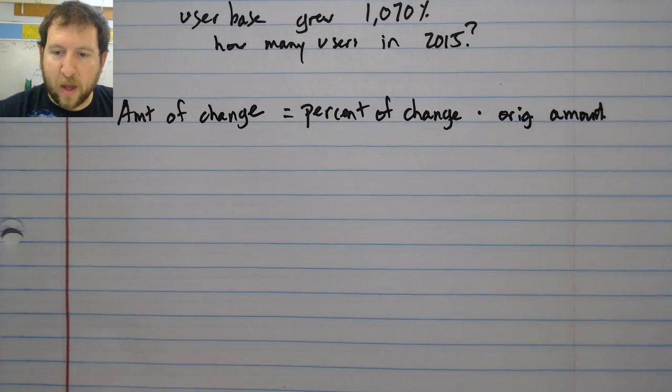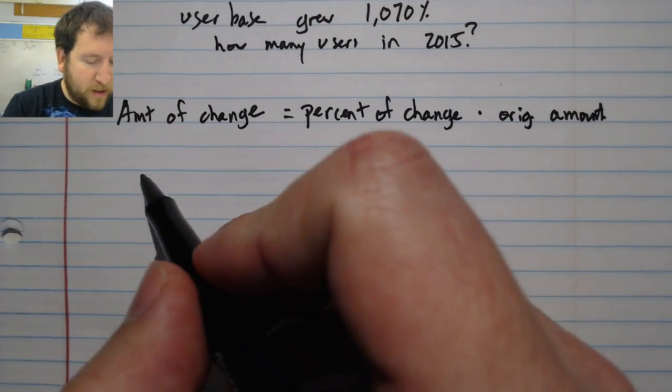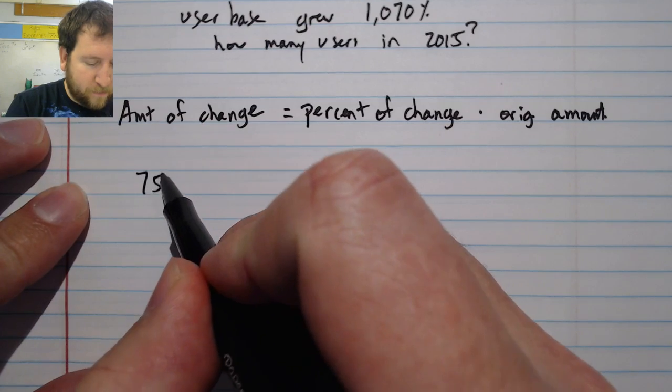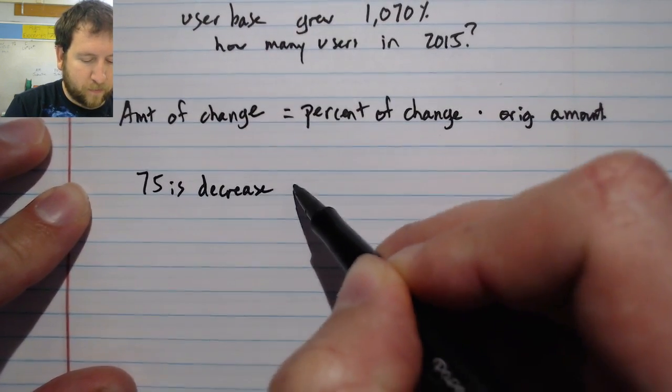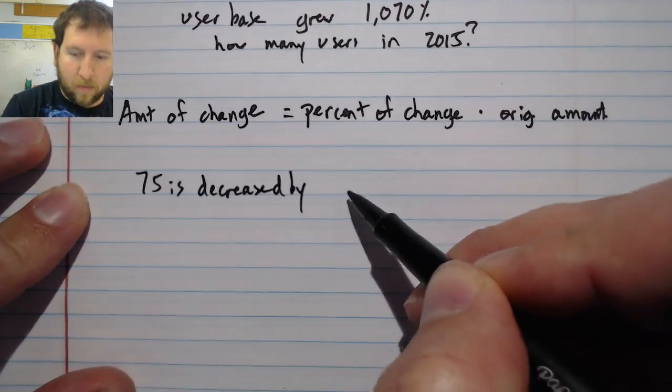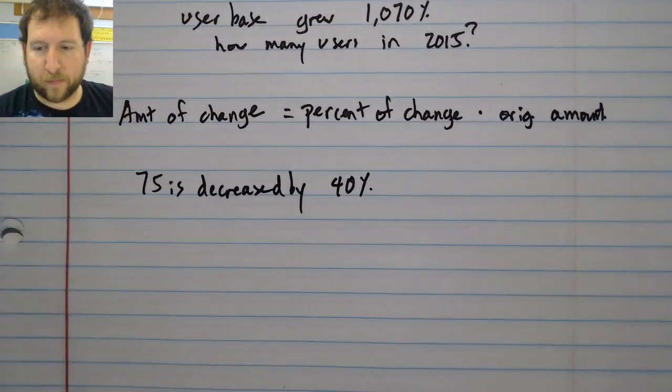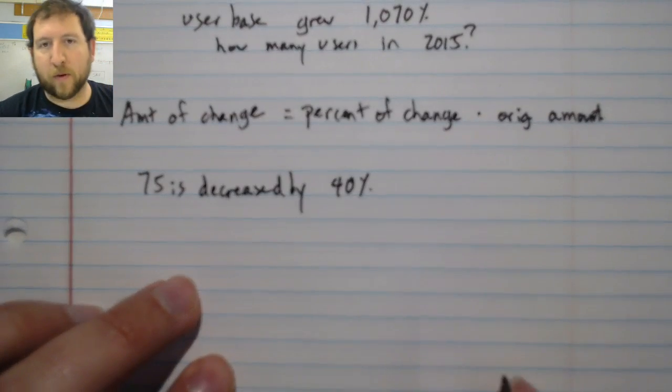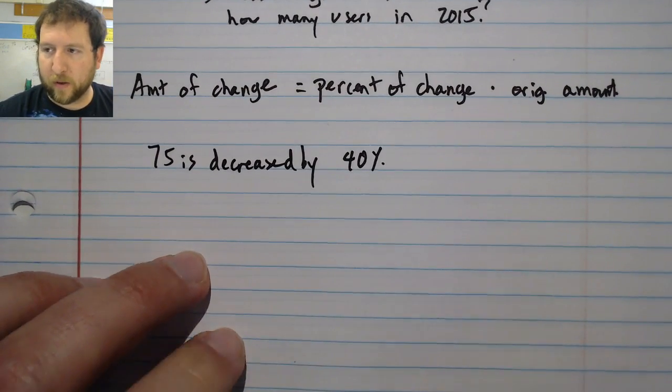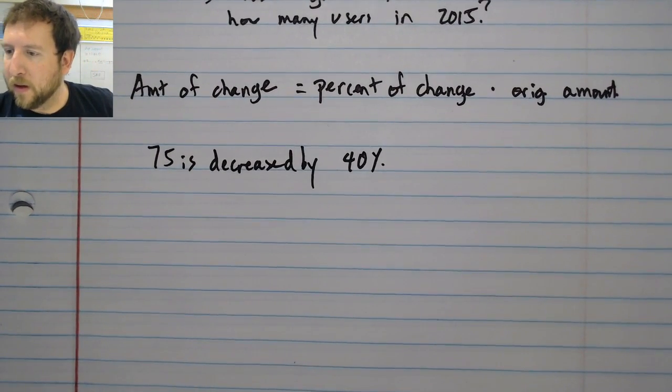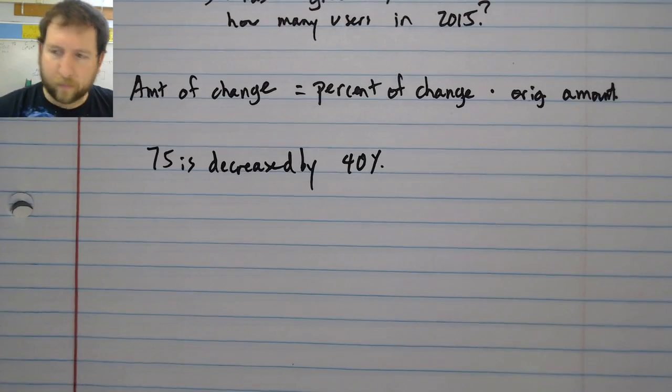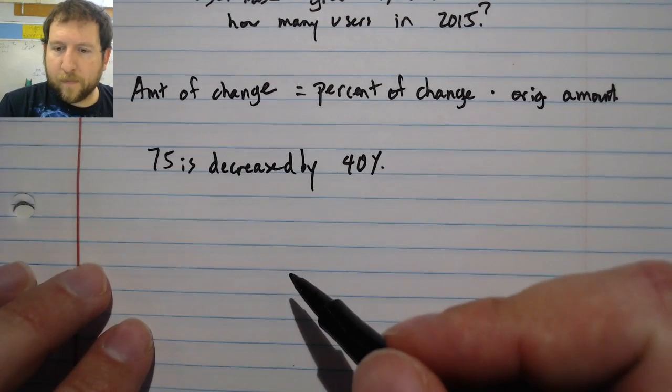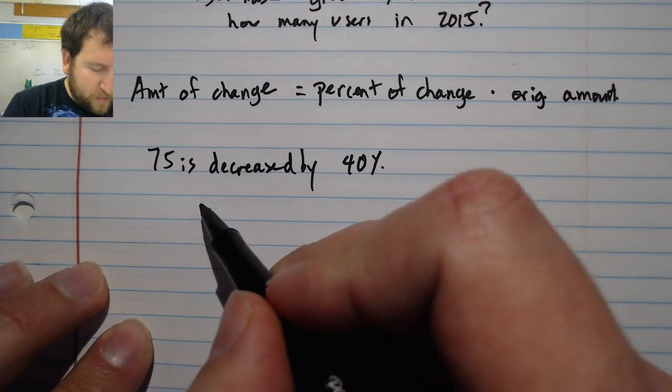Let's see what happens when 75 is decreased by 40 percent. I'm going to write my formula because that always helps me focus. Let me fix my camera quick so that I won't go in and out of focus.